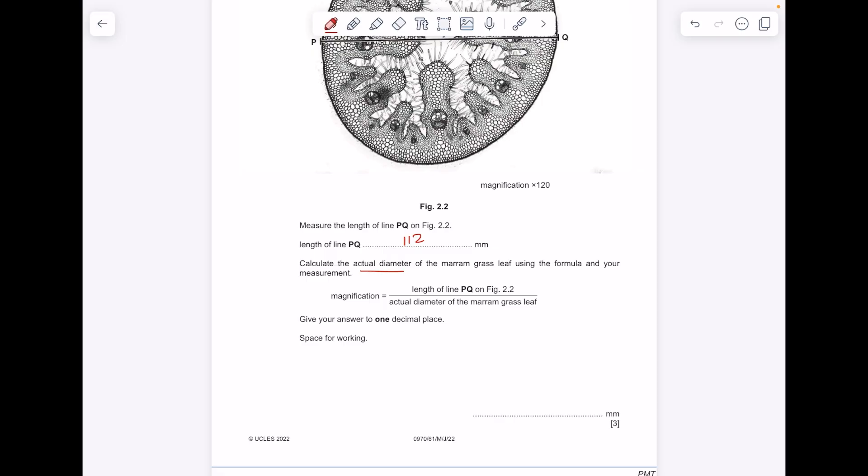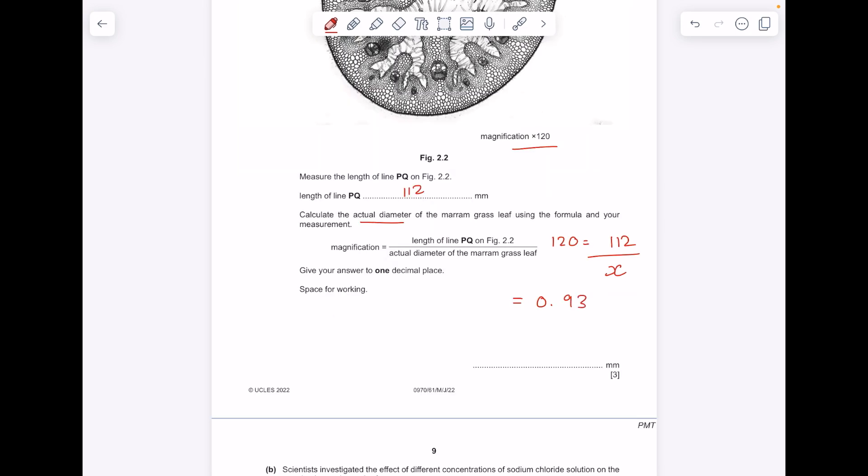Calculate the actual diameter of the marum grass leaf using the formula and your measurement. So just don't bother rearranging everything. Just put in the information they've given you. So the magnification is 120. The length of the line PQ we've just found. The actual diameter is what we're after. So to find X, do 112 divided by 120. And then they want it to one decimal place. So that's 0.9.